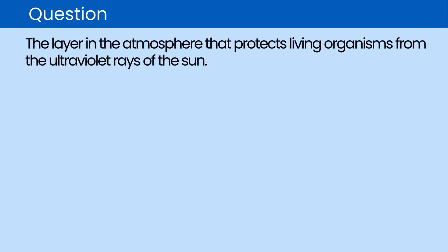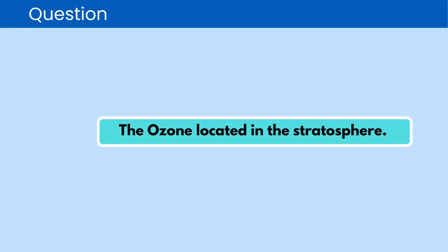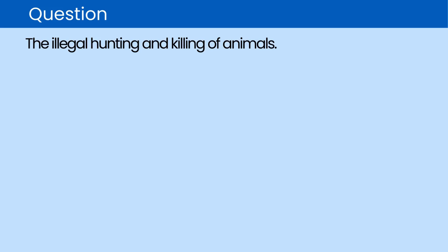Question. The layer in the atmosphere that protects living organisms from the ultraviolet rays of the sun. The correct answer is ozone stratosphere. Question. The illegal hunting and killing of animals. The correct answer is poaching.